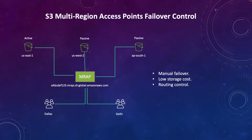To use failover control, once you add your buckets you need to define which buckets or regions you want to keep active and which you want to keep passive. At least one region should be active so that all requests can go to that active region. Once you have a failover event, you can promote another region to active and the previously active one becomes passive. The advantages here: first, you get routing control — you can control where your traffic goes. Second, you can do manual failover, so instead of automatic failover you decide which region should receive requests if one goes down.